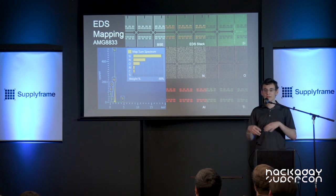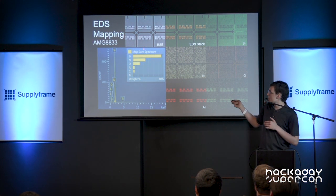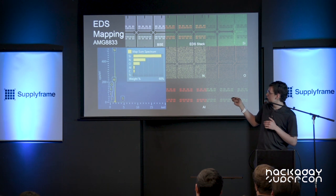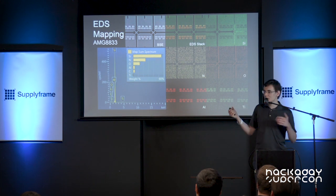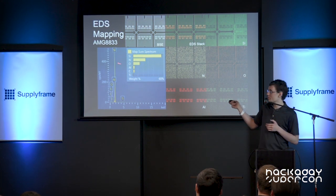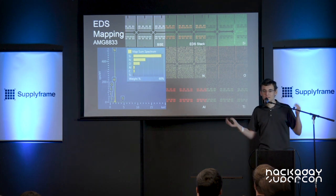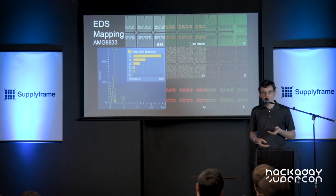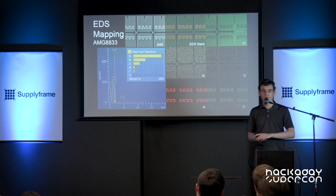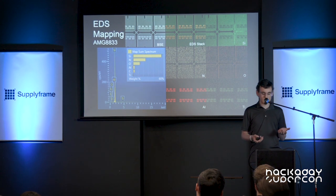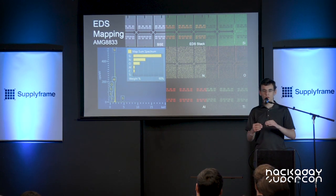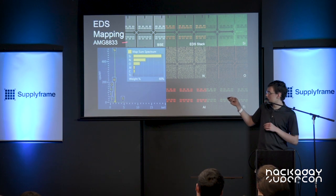The other really cool thing you can do with EDS is make a map of a sample. We'll start with a backscatter electron image — you can see some bright spots, so we know we have something heavy, and everything else is pretty dull. This is an ANG 8833 thermal camera — this is about one pixel on it. Looking at the EDS information, we can see we have a lot of silicon everywhere, which is not a big surprise — it's a device built on a silicon wafer. Below that, we've got some nitrogen and oxygen, which are going to be various layers growing up on top of the silicon.